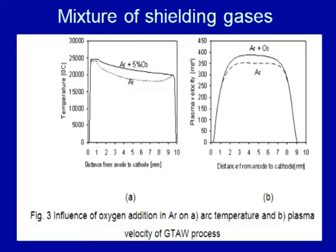This diagram further shows the effect of oxygen addition in argon. When oxygen is added to argon, higher temperature is obtained in the arc zone, and the plasma velocity is also found to be higher with the argon-oxygen mixture compared to pure argon. Addition of oxygen to argon helps in increasing both the temperature and the velocity of the plasma, which helps increase the heat generated and the temperature in the arc zone, further enabling higher welding speed with higher penetration.